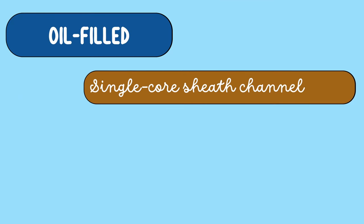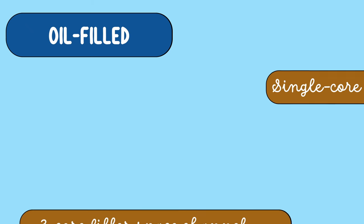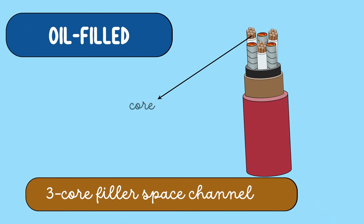As far as single-core sheath channel is concerned, oil ducts are provided in the metallic sheath. In the three-core filler space channel, we have three cores and the oil ducts are located in the filler spaces.